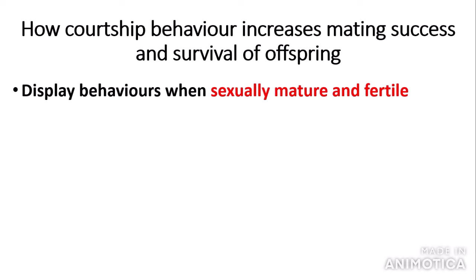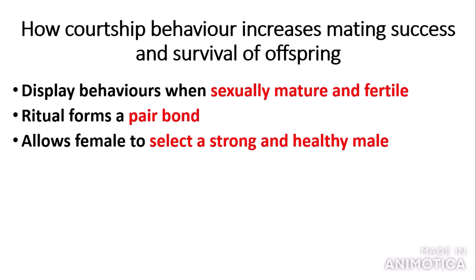Organisms display these behaviors only when they are sexually mature and fertile, which ensures a high chance of fertilization of the sperm and egg. Also, the courtship ritual makes sure that organisms form a pair bond, leading to a more successful upbringing of the offspring so they are more likely to survive and reproduce again over many generations. This also allows a female or male to select a strong and healthy mate, linking to natural selection, as advantageous characteristics can then be passed on to offspring.